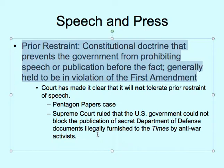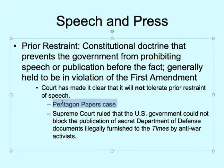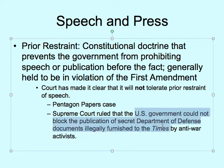A great example is the Pentagon Papers. In relation to Vietnam, the Pentagon Papers revealed that LBJ did some unethical things — remember the Gulf of Tonkin Resolution. When the government knew about this, they could not prevent publication. The Supreme Court ruled that the U.S. government could not block publication of those secret Department of Defense documents, even though they were illegally furnished. That's prior restraint.